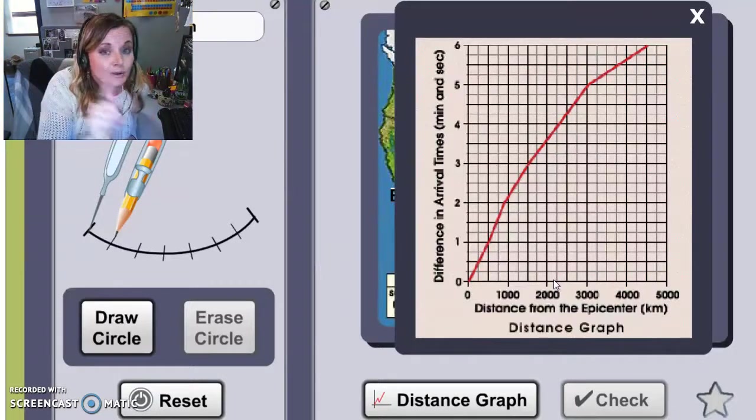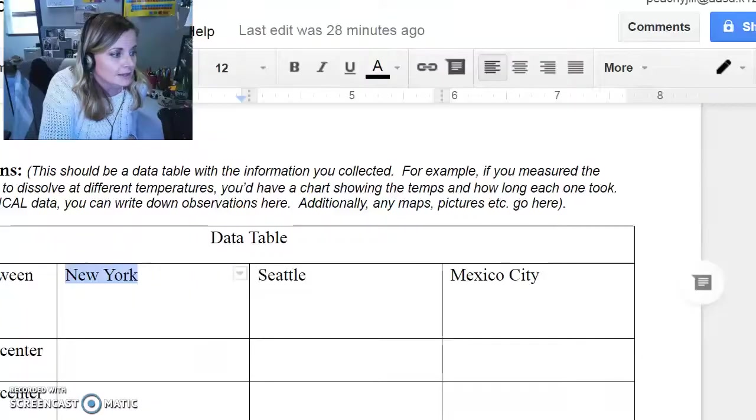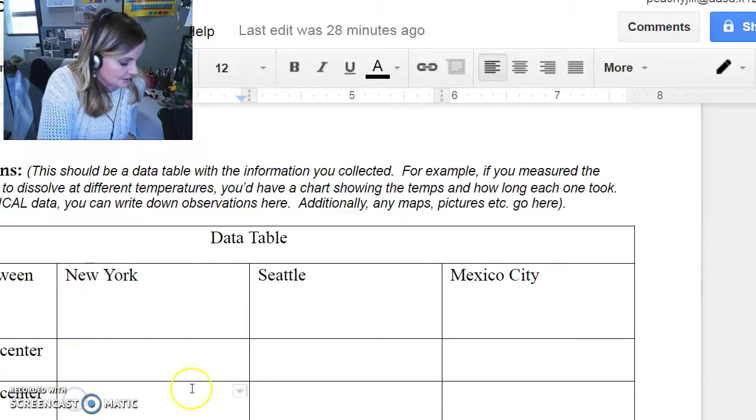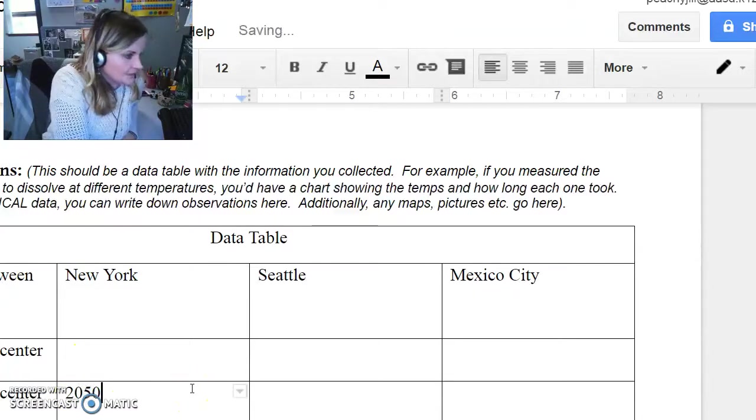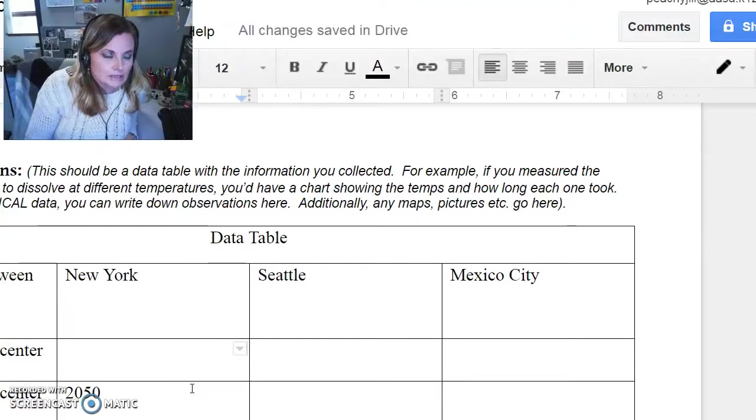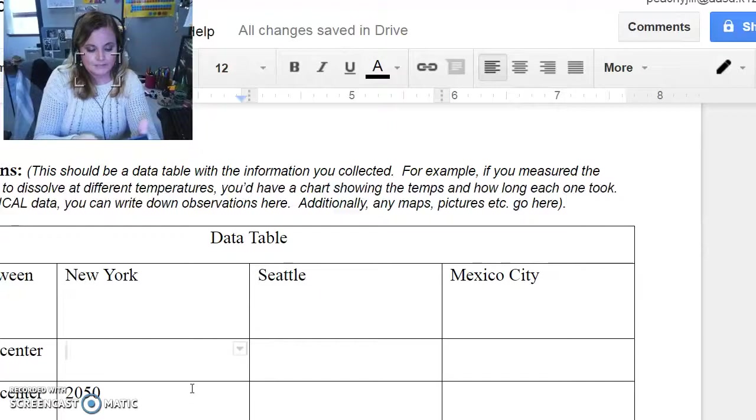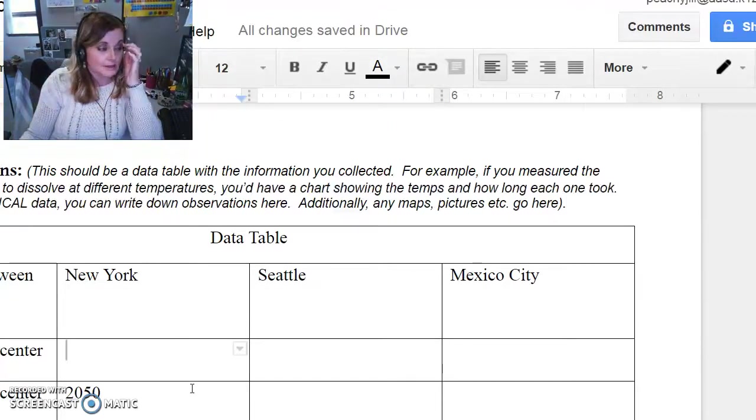Okay, so then one of the things is going to ask you on your template is to put that. So that was 2050 kilometers, but it's going to ask you to put that in miles too. So to get it in miles, you're going to take that number and divide by 0.6. So where's my calculator? 2050 divided by 0.6 is 3417.